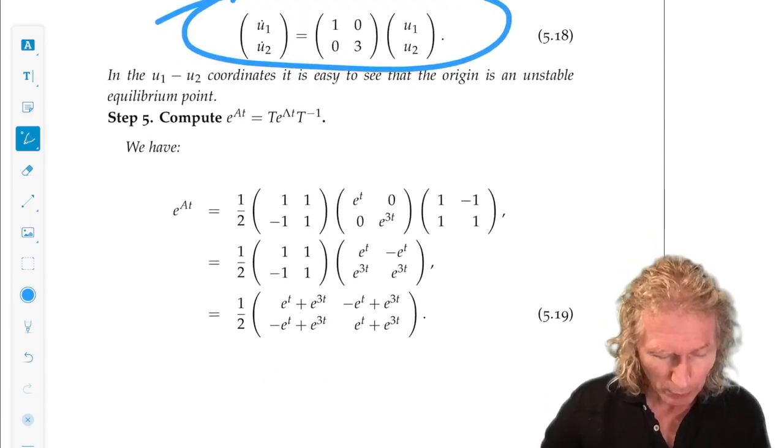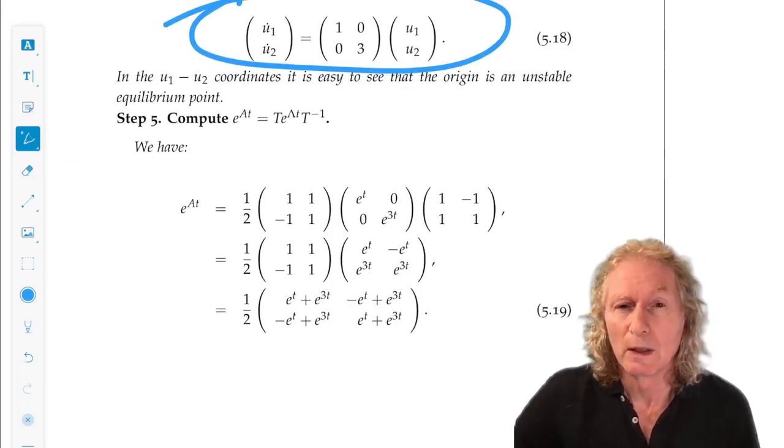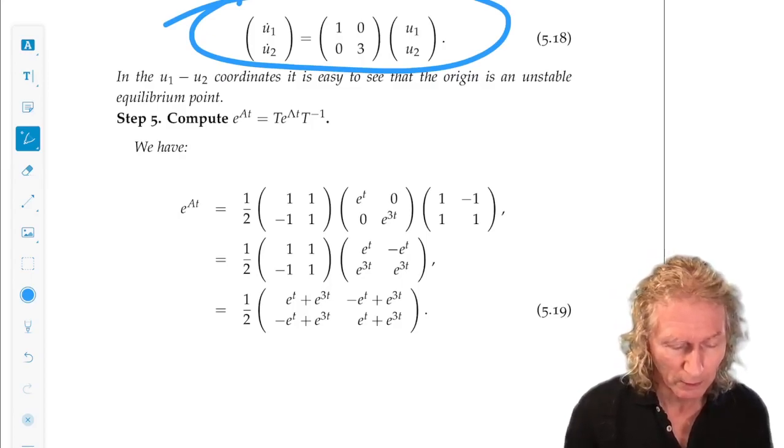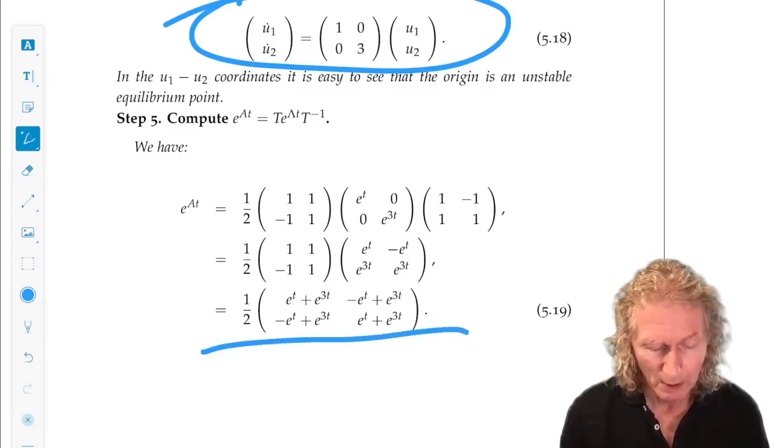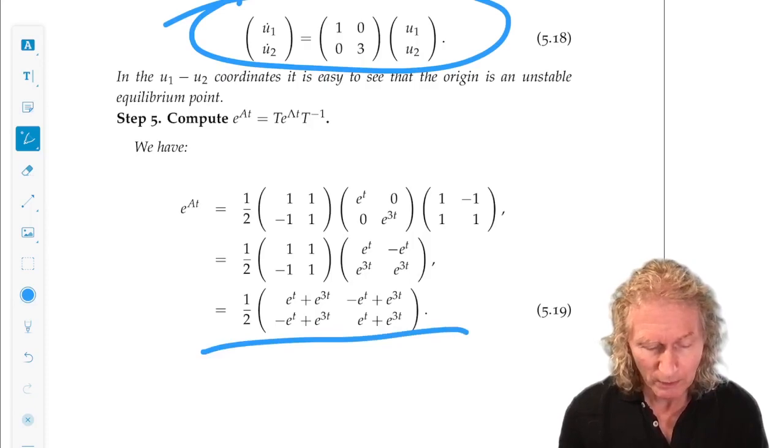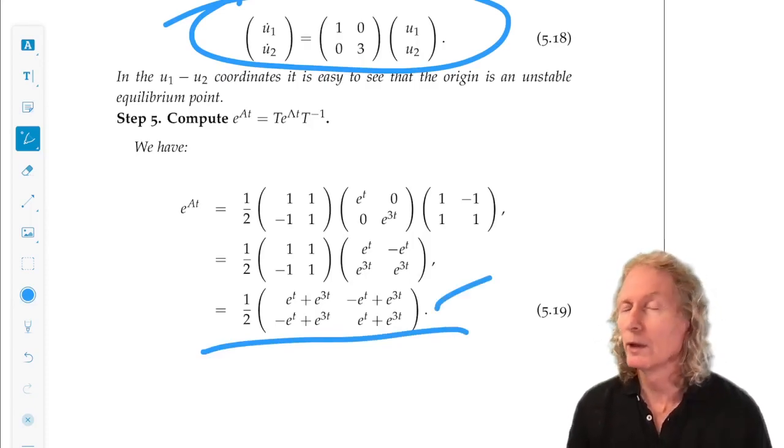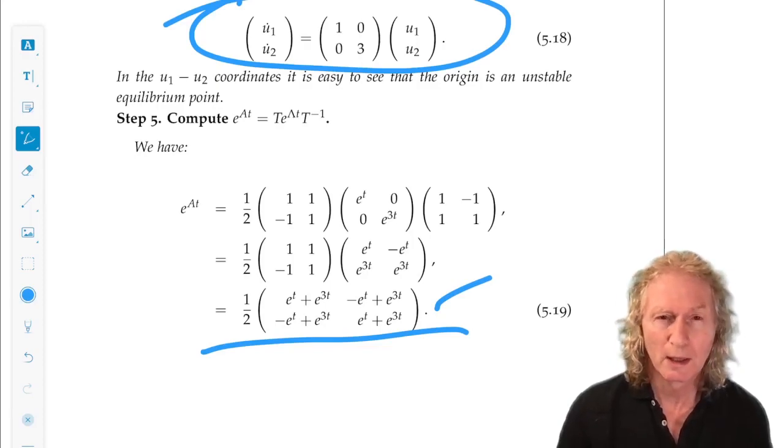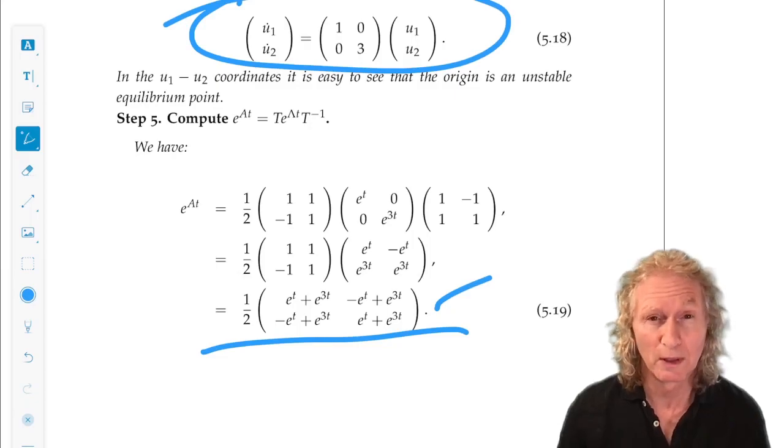Now, if we want to compute e to the At, and we can easily see what that is, and we see also that in the original coordinates, which is what e to the At is in, we still get exponentially growing solutions. So, the origin is still unstable.